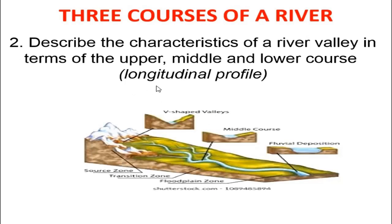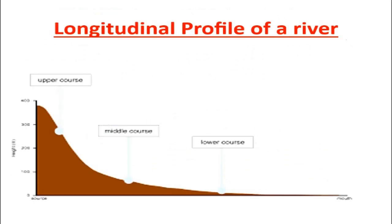Now, this is what we refer to as a longitudinal profile of a river. This is just a picture indicating to you a longitudinal profile of a river. At times, you'll be asked in an examination to be able to identify the three courses on a diagram like the one you have here, so you should be able to clearly label them.